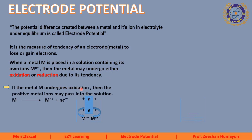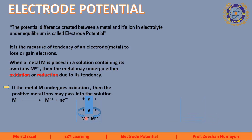If the metal M undergoes oxidation, then the positive metal ions may pass into the solution. Oxidation ka matlab hai oxidation number ka barh jaana. Yeh ek metal hai — us metal ne electron ko lose kiya, jab electron ko lose kiya toh yeh apne ions mein change ho gaya, Mn+ positive ion mein change ho gaya. Yani us ka jo oxidation number 0 tha aur ab us ka oxidation number n+ ho gaya. Toh agar koi metal oxidation karega, toh positive ions solution mein chale jaenge aur metal par khud negative charge aa jaayega.